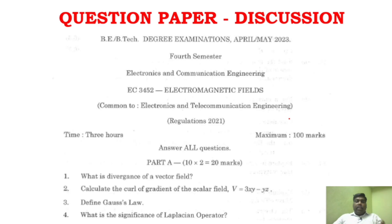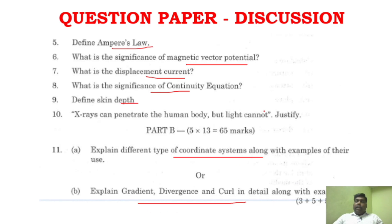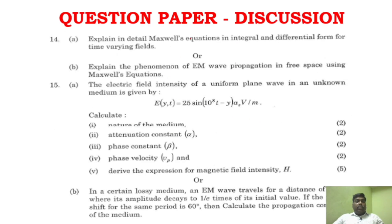But if you see the April/May 2023 paper — in 2-mark questions, not at all a problem; everything is direct questions, all are direct questions. Topics include: displacement current, significance of continuity equations, skin depth, and whether X-rays can penetrate — justify. In Part B: different types of coordinate systems, gradient, divergence, and curl explained. Unit 2: electric flux density problem, electric field intensity problem. Unit 3: magnetic field intensity problem, magnetic vector potential problem. Unit 4: Maxwell's equations and EM wave in free space equation. Unit 5: once again, a problem.